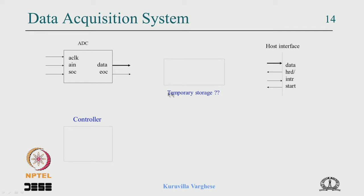The question is what is the best kind of temporary storage — it has to be a memory. A normal static RAM has one address bus and one data bus, but the ADC side has to write and the host has to read. With only one address bus and one data bus, you need multiplexing and it can become complex. One would think to use a dual port RAM, which has two data buses and two address buses — one port for writing and one for reading.